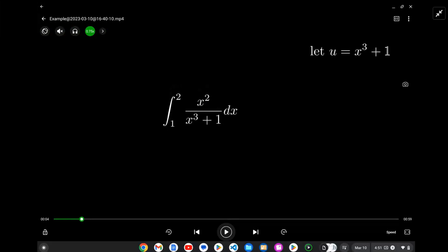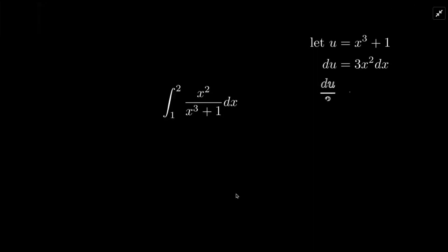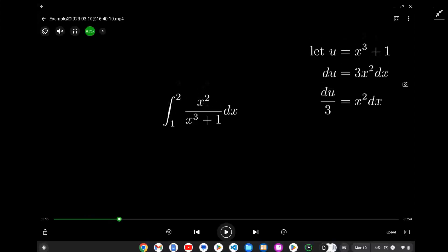Then we're going to get du, which is there, and then we have an expression now for the x squared dx, which is here. The x squared dx is du over 3. So those are all our substitutions.